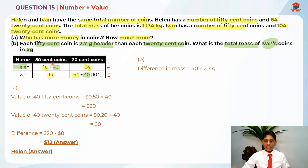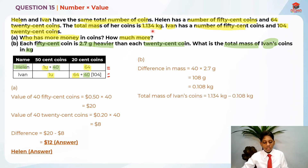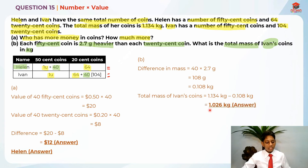First, let's find the difference in mass. 40 × 2.7 grams = 108 grams. So Helen has 108 grams more than Ivan, which is 0.108 kilograms. The total mass of Ivan's coins is Helen's total mass minus this difference: 1.134 kg − 0.108 kg = 1.026 kilograms.